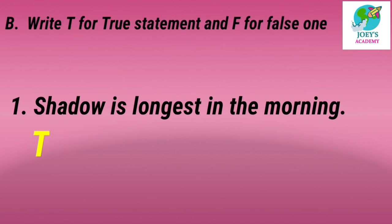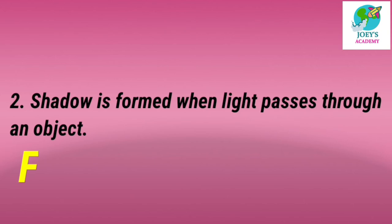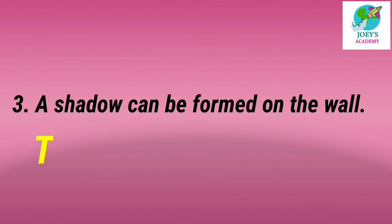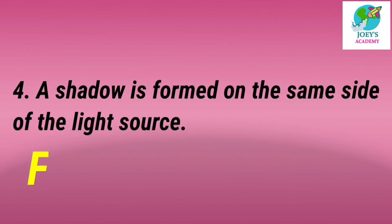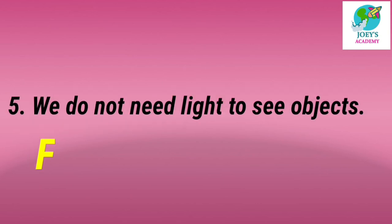Write T for true statement and F for false one. First: shadow is longest in the morning — True. Second: shadow is formed when light passes through an object — False. A shadow is formed when an object does not let light pass through it. Third: a shadow can be formed on the wall — True. Fourth: a shadow is formed on the same side of light source — False. A shadow is formed on the opposite side of light source. Fifth: we do not need light to see objects — False. We need light to see objects.